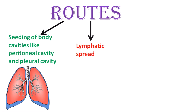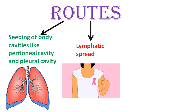The next route to be discussed is lymphatic spread. Tumor cells can very easily, and in fact most commonly, spread by the lymphatic route, spreading to the lymph nodes in the body such as the supraclavicular lymph nodes and the mediastinal lymph nodes. A very good example of lymphatic spread would be breast cancer, in which carcinoma from one side of the breast spreads to the other side via the internal mammary nodes situated just in between the two breasts.